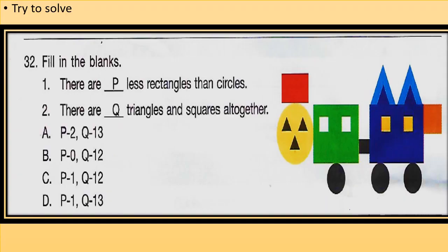Question number 32: fill in the blanks. See the figure carefully. First: there are P less rectangles than circles — count the rectangles and circles in the figure and calculate the value of P. Second: there are Q triangles and squares altogether — count the triangles and squares to calculate Q, then choose the correct option. See answers at the end of the video.